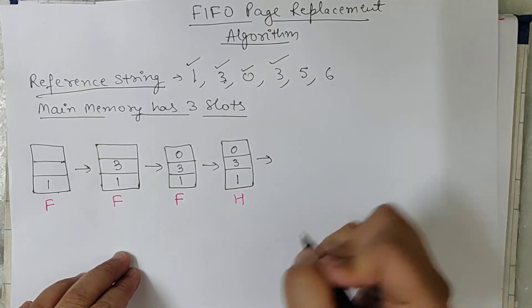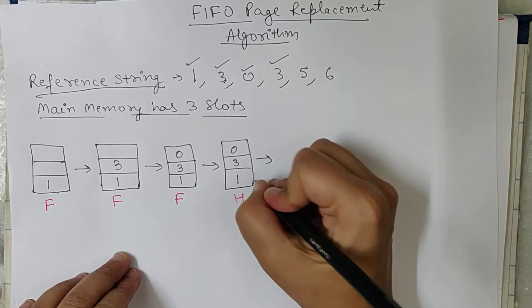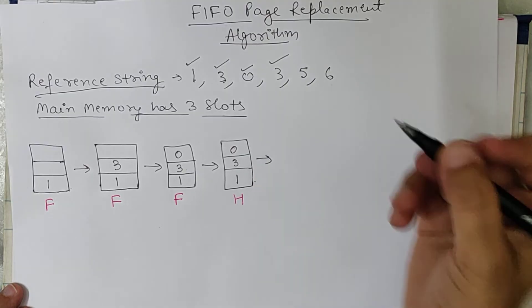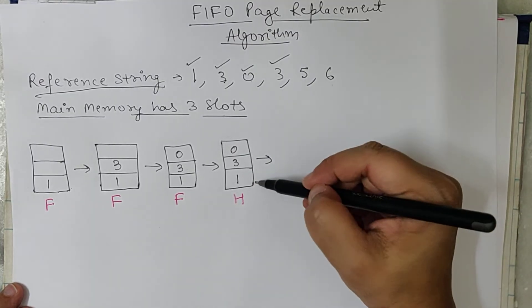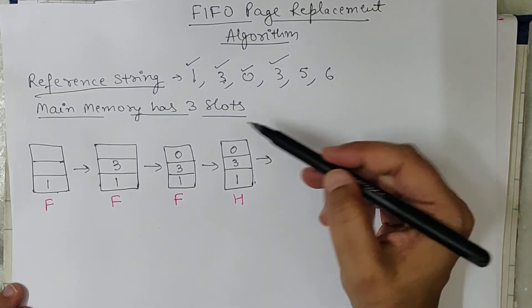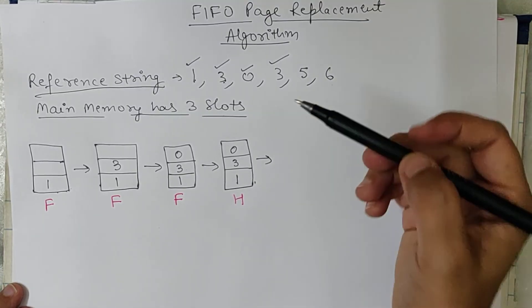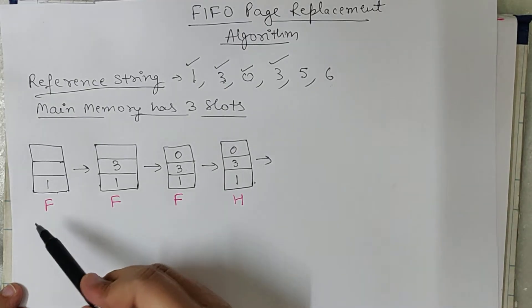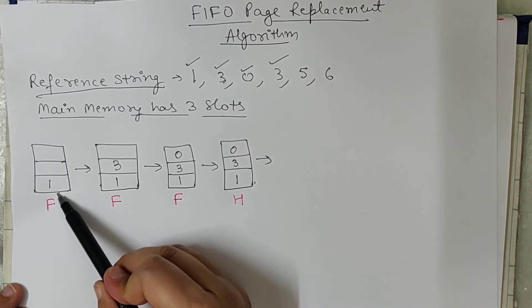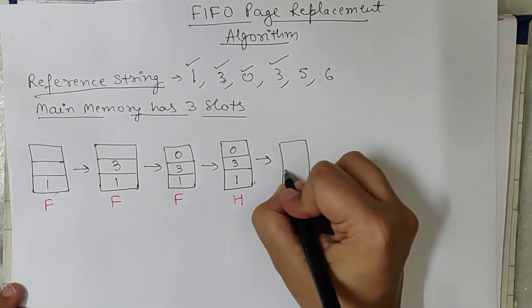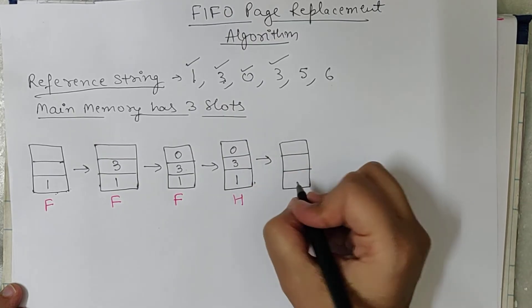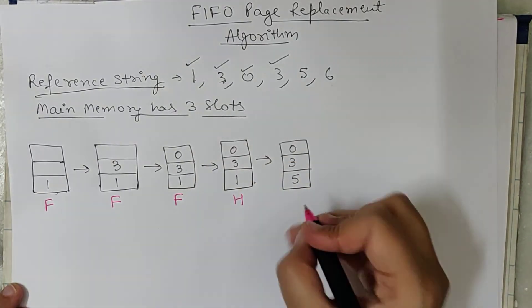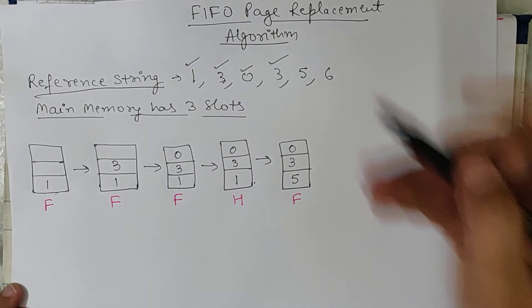Now CPU wants to execute page number 5. Main memory is full and page 5 is not present, so we have to replace one of the three pages. According to FIFO, the page that came first will be replaced. Page 1 came first, so page 1 is replaced by page 5. A page fault occurs because page 5 was not in main memory.